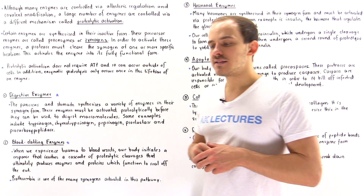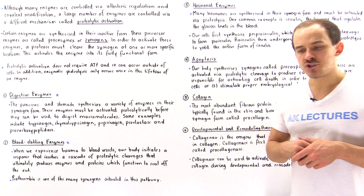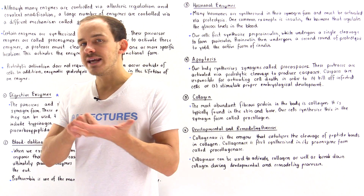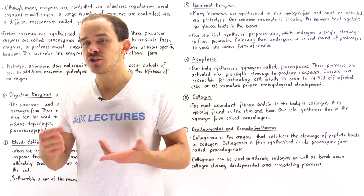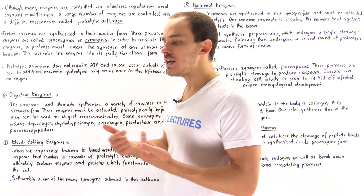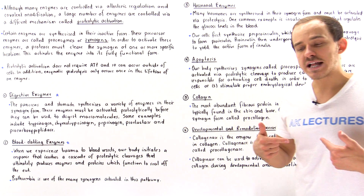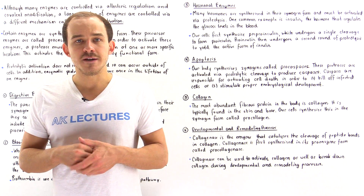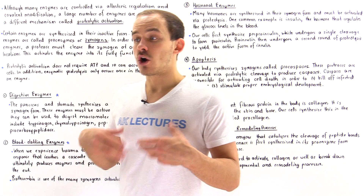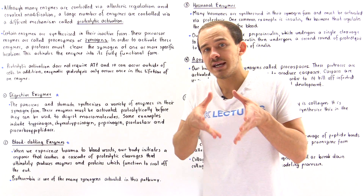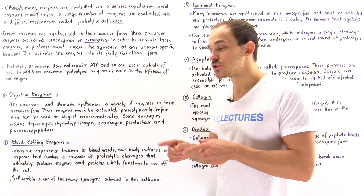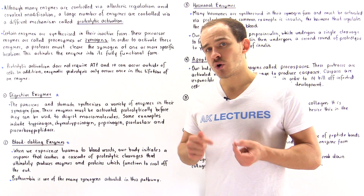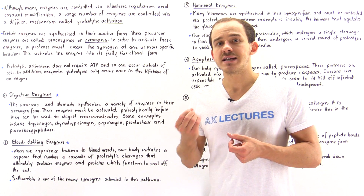When we discussed the process of phosphorylation, we said that only those enzymes and proteins found inside our cells can actually be controlled via phosphorylation, because phosphorylation requires the presence of ATP. ATP molecules are found abundantly only inside our cells, so phosphorylation can control only those enzymes and proteins which exist inside our cells.